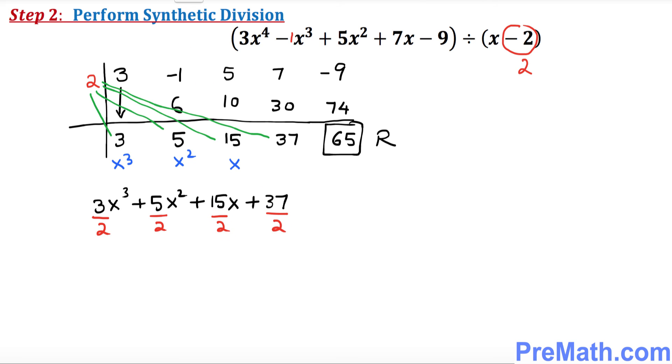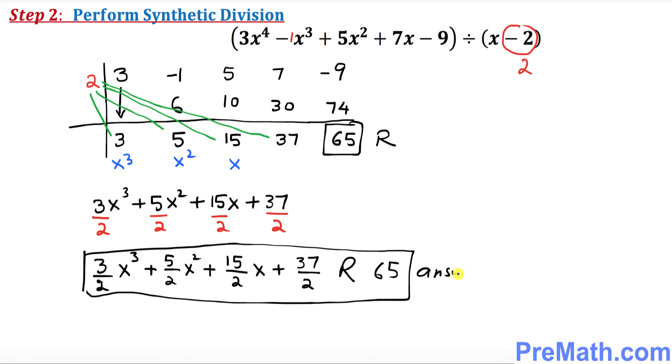So we end up with what? 3 over 2 x power 3 plus 5 over 2 x square plus 15 over 2 x plus 37 over 2 with the remainder of 65. And that is your complete answer.